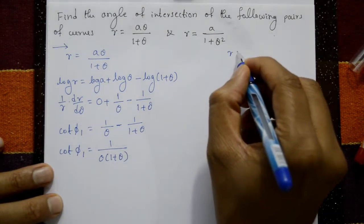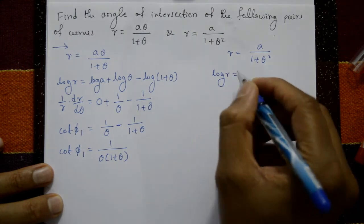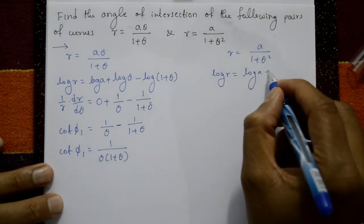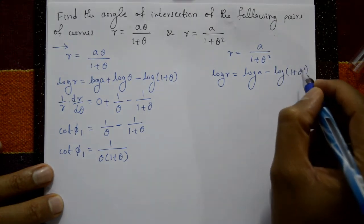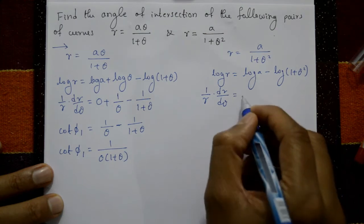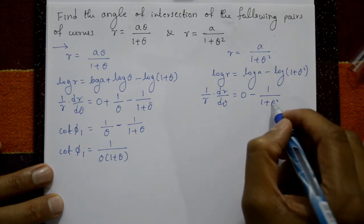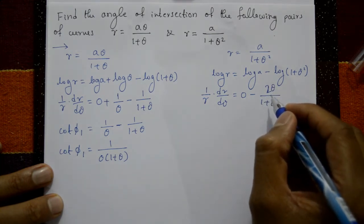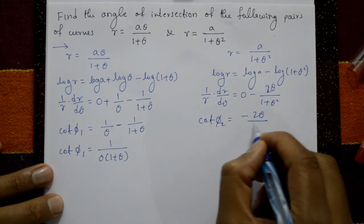Second curve: R = a/(1+θ²). Taking log: logR = logA − log(1+θ²). Differentiating with respect to θ: (1/R)·(dR/dθ) = −2θ/(1+θ²), and this is cotφ₂. Therefore cotφ₂ = −2θ/(1+θ²).